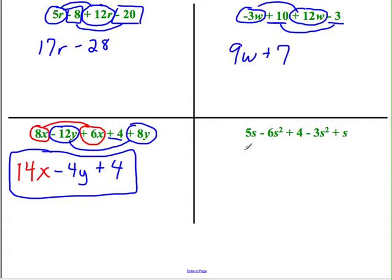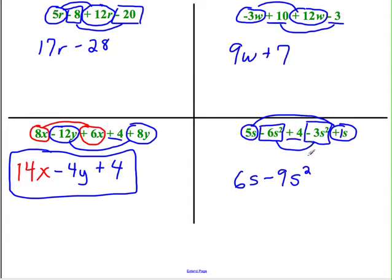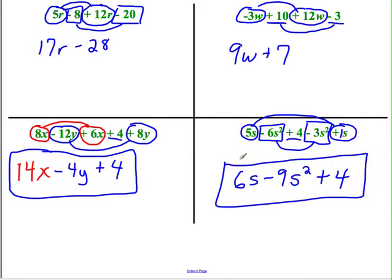And then the last one here. I've got 5S minus 6S squared. Are they the same? Are they exactly alike? No, they're not. S is different than S squared. Very, very different. So I can only take him to another S. Is there another plain S? Yes. At the end. And it's just a 1S. So put those together. We're looking at 6S. And now look at this minus 6S squared. Are there any more S squareds out there? Right here it is. Put those together. Minus 6 minus 3 is a minus 9. So we've got minus 9S squared. Plus 4 again has no friends. So we'll just bring them down. Plus 4.